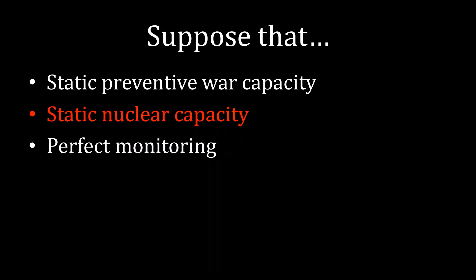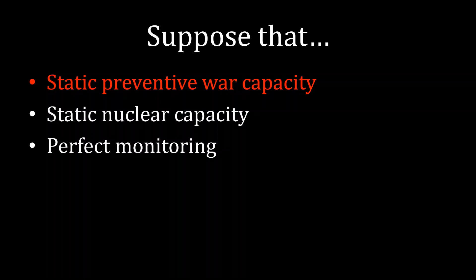Unfortunately, there's a commitment problem here. One of the assumptions in the baseline model is that the potential proliferator had a static capacity to build nuclear weapons — it would not change from year to year. If the opponent were to ever stop giving concessions, the potential proliferator could respond by developing nuclear weapons and punish the opponent for having gone back on the deal. Similarly, the model assumed a static preventive war capacity — from year to year, the cost of fighting a preventive war from the opponent's perspective wasn't really going to change very much.